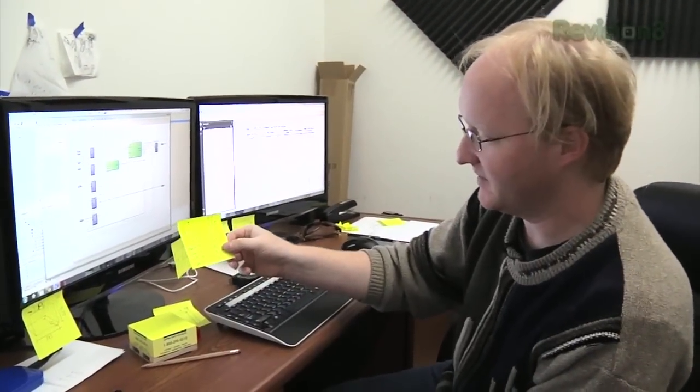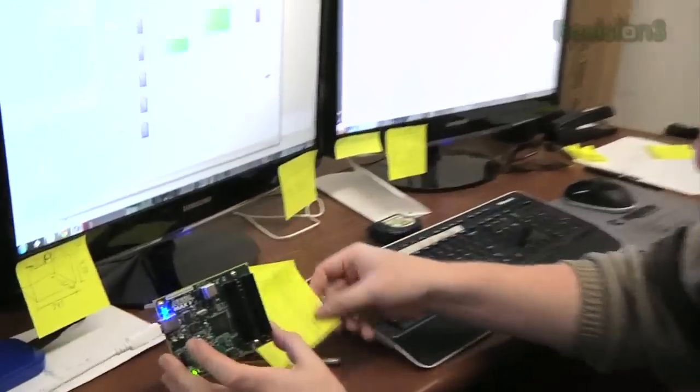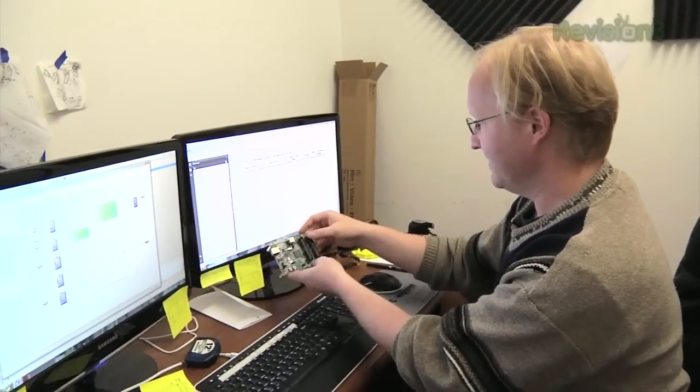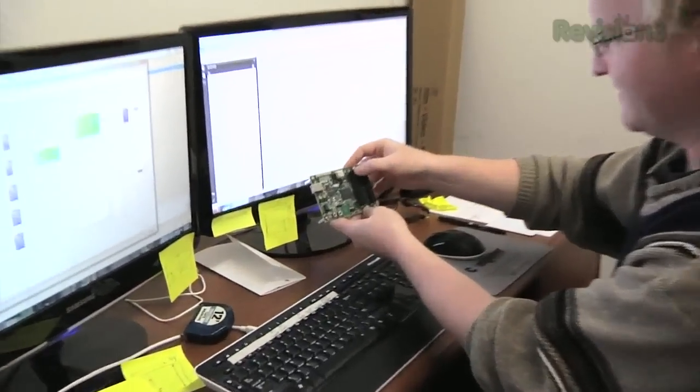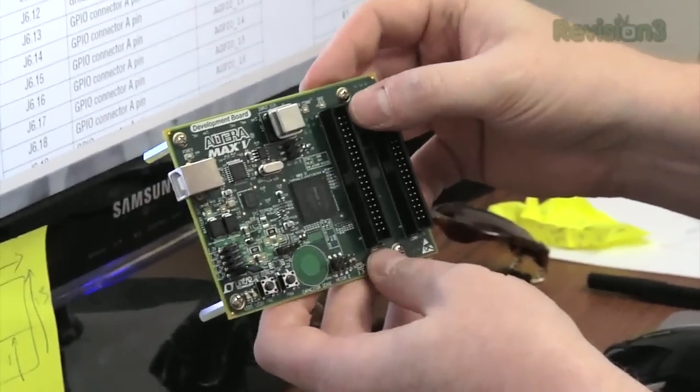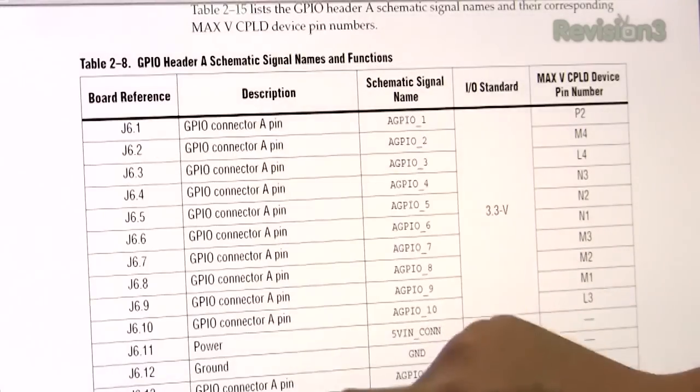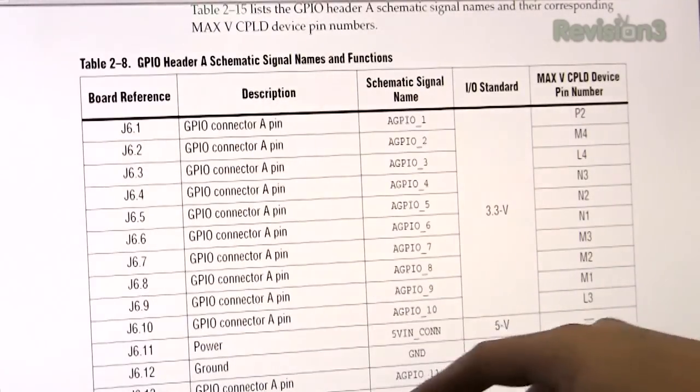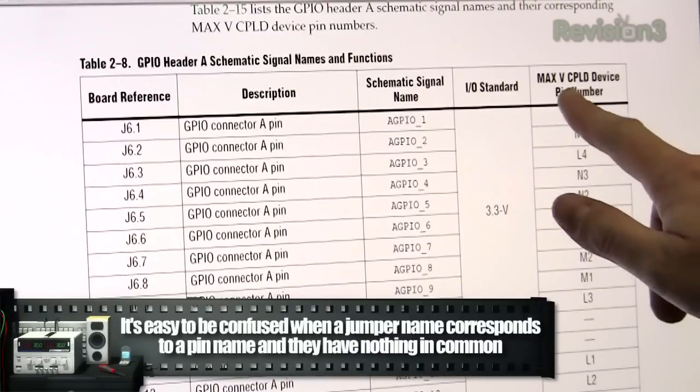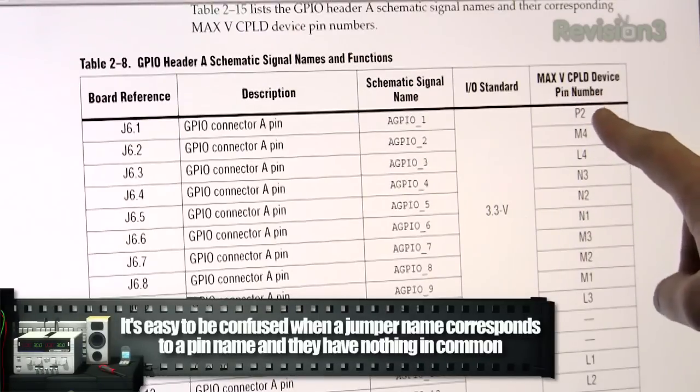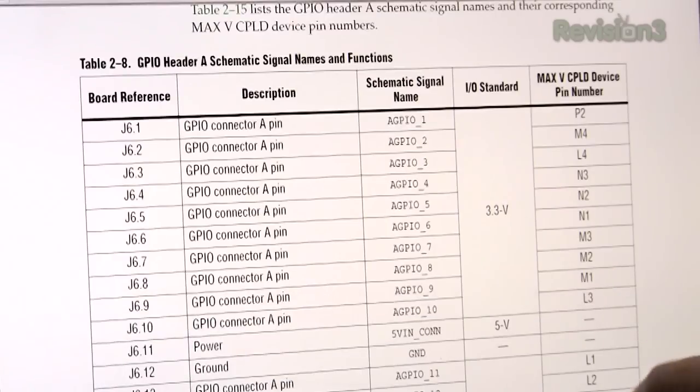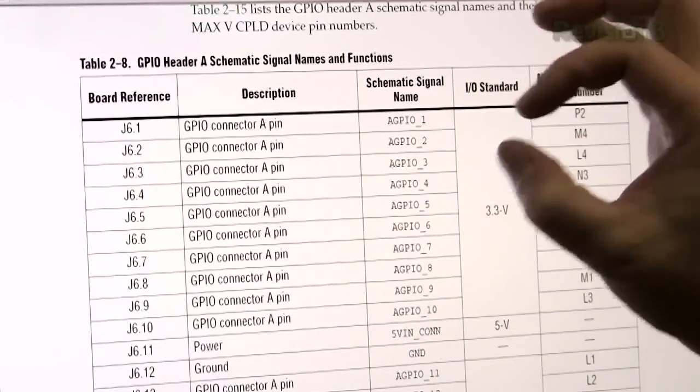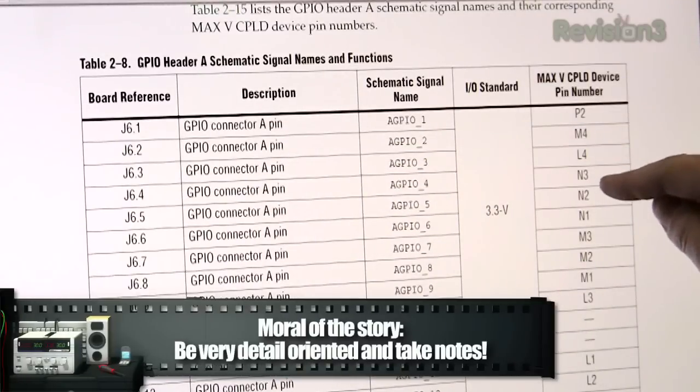And I wrote down what we need here in a pin configuration that will match up to this. So here's the PDF that tells us what all the connectors are on the development board. Now we need to get 16 bits. So we see we've got this column here, which is basically just like one of those IDE hard drive connectors from the days of old. And this is called Jumper 6. So we have Jumper 6, Pin 1, Jumper 6, Pin 2, Jumper 6, Pin 3, and so on. So the important thing that we need to look at is this number over here, the Max 5 CPLD device pin number. So that's actually what we have to assign in the pin editor.